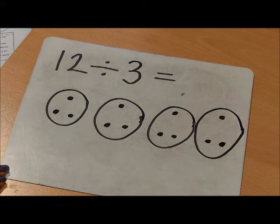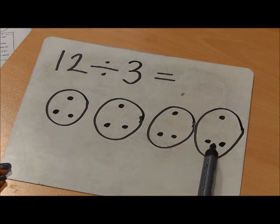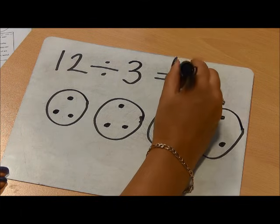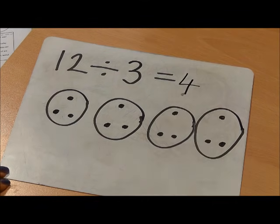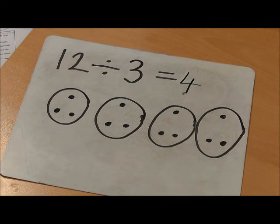And I have put them into groups of three. Now I need to look at how many groups I have made: one, two, three, four. So my answer is four. For this division calculation, I have 12 and I've shared it into groups of three. My answer is four.